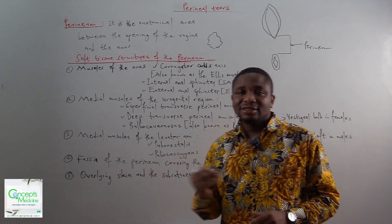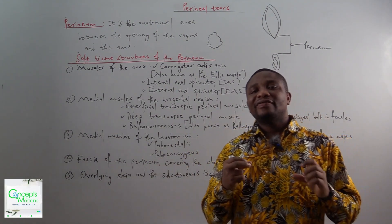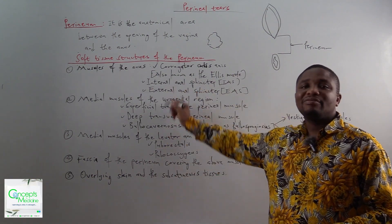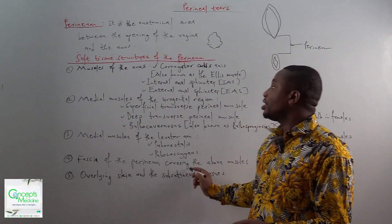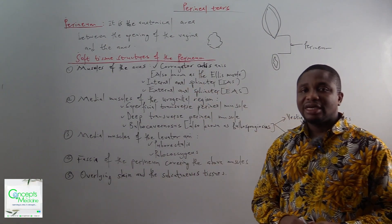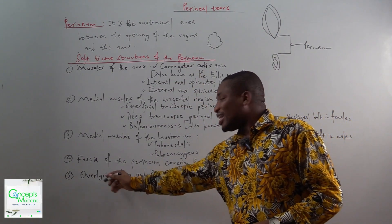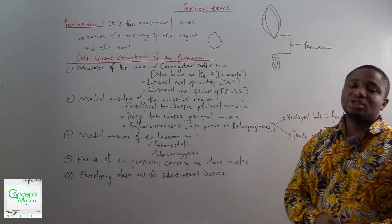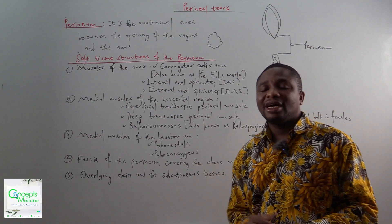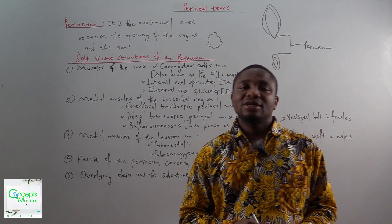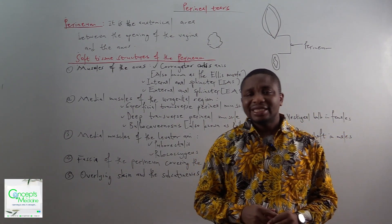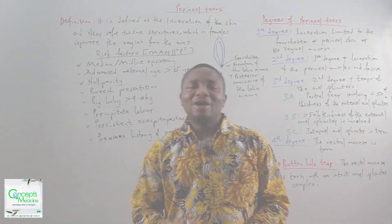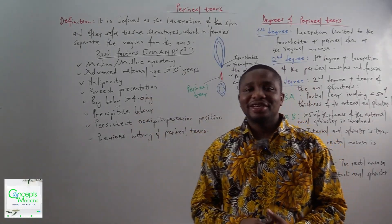The next group is the fascia of the perineum that covers the above muscles, and lastly, the overlying skin and the subcutaneous tissues. So these are the soft tissue structures of the perineum. The next thing we'll look at is the perineal tears.